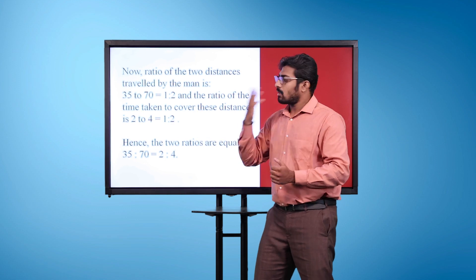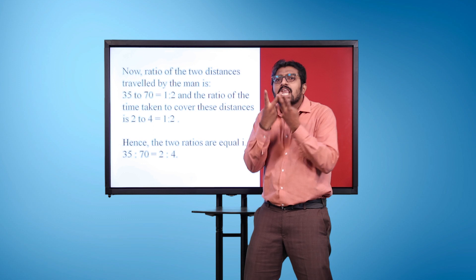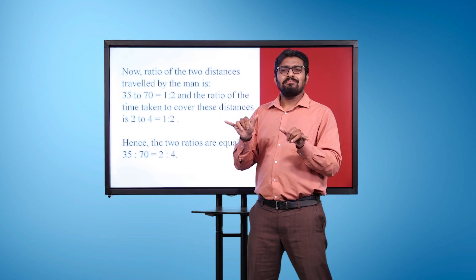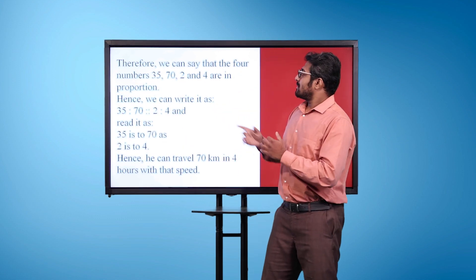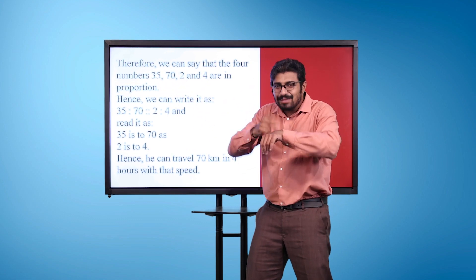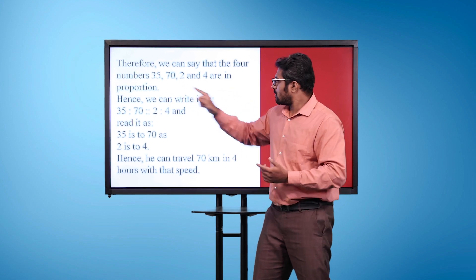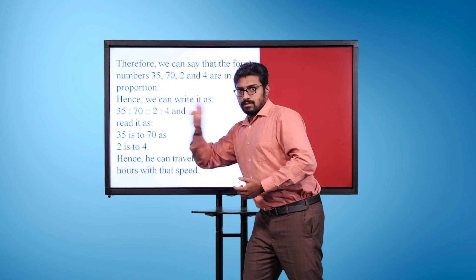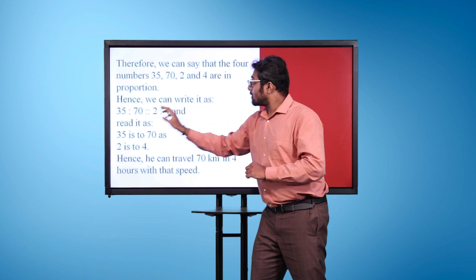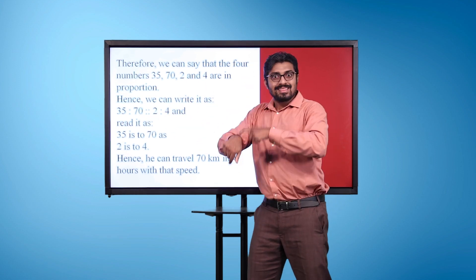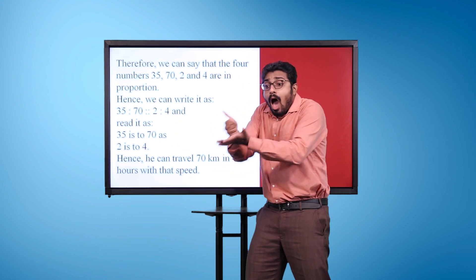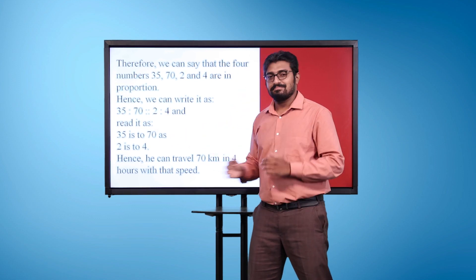Hence, the two ratios are equal, that is, 35 is to 70 is equal to 2 is to 4. Therefore, we can say that the four numbers 35, 70, 2, and 4 are in proportion. Hence, we can write it as 35 is to 70, double colons, 2 is to 4, and read it as 35 is to 70 as 2 is to 4. Hence, he can travel 70 kilometers in 4 hours with that speed.